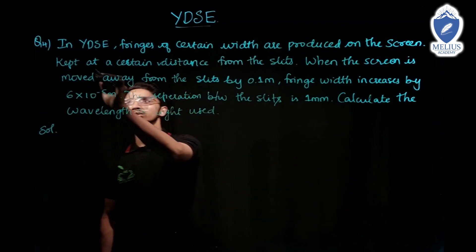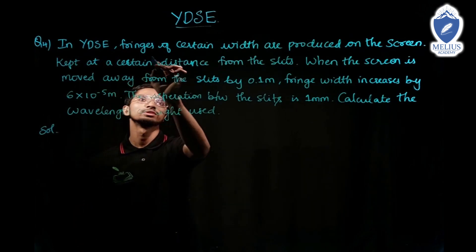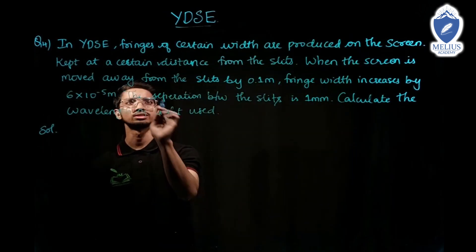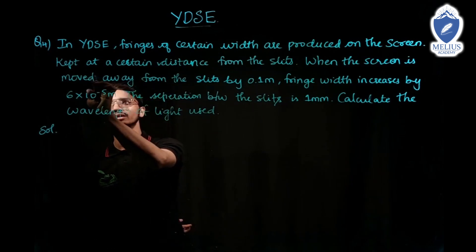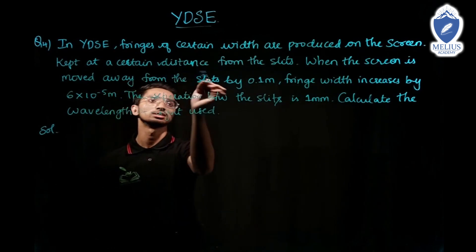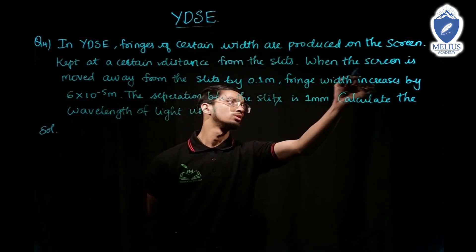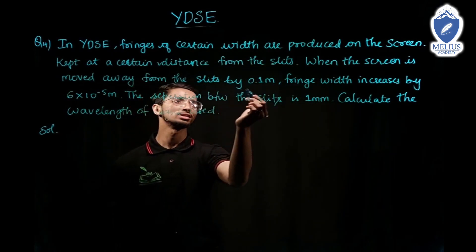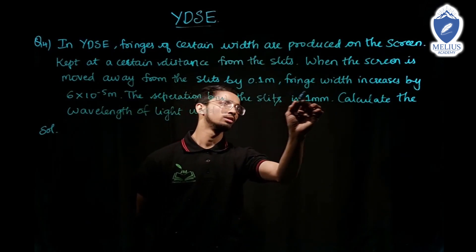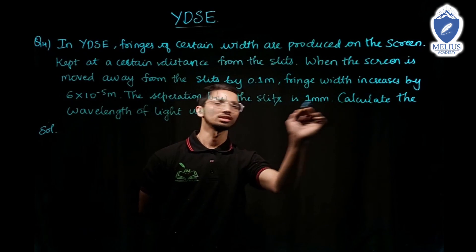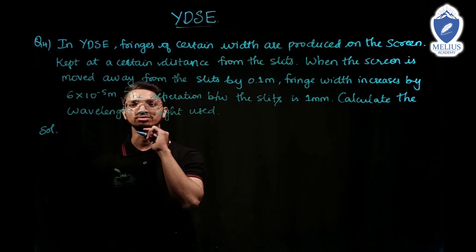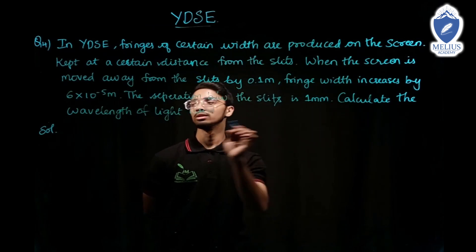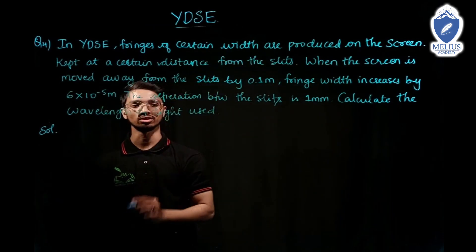Next question: in YDSE, fringes of certain width are produced on a screen at a certain distance from the slits. When the screen is moved away from the slits by 0.1 meter, the fringe width increases by 6 into 10⁻⁵ meter. The separation between the slits is 1 millimeter. Calculate the wavelength of light used.